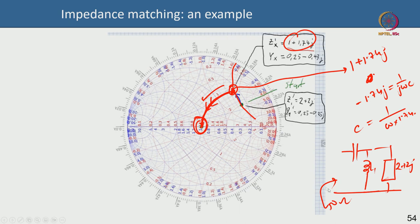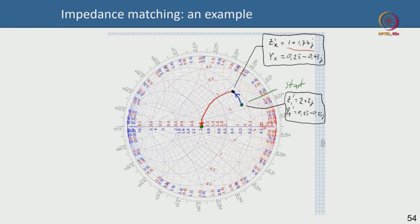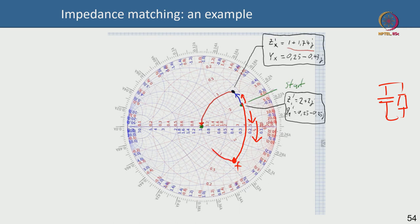There is another way: instead of going through the top half of the Smith chart, you can come through the bottom half. Moving along the admittance circle downward to the lower intersection corresponds to a capacitor in shunt. Then, from that lower point, you travel along the impedance circle upward — which is series inductor — to reach the matched center. Adding that series inductor of appropriate value also gives you 50 ohm for the same load.